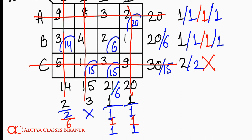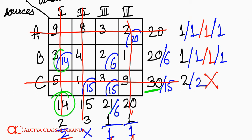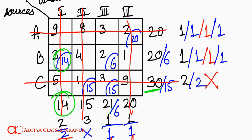Let us check the feasibility of the solution. A needed 20, got 20. B needed 20, got 14 plus 6 — 20, complete. C needed 30, got 15 plus 15 — 30. On the column side: market 1 needed 14, got 14. Market 2 needed 15, got 15. Market 3 needed 21, got 15 plus 6 — 21. Market 4 needed 20, got 20. So our solution is initial, basic, and feasible.